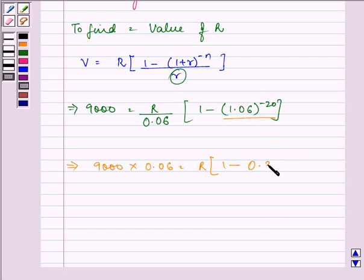Which implies we have 9000 into 0.06 equal to R into their difference comes out to be 0.6881.